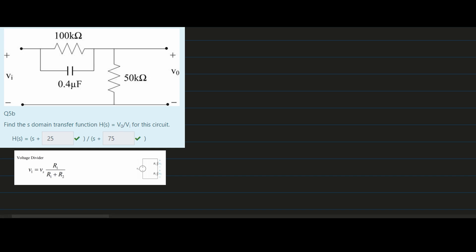Looking at this circuit, we need to find H of S. To find H of S, we need to find V0 over VI, and we're going to use the voltage divider method. First, we need to combine these two impedances together. Before we do this, we need to convert this into the S domain.